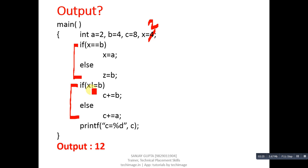Then second if condition will be checked. It is checking x not equals to b. So x is 2 and b is 4, so 2 not equals to 4, again it is true.